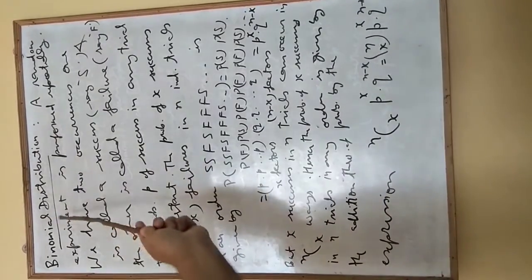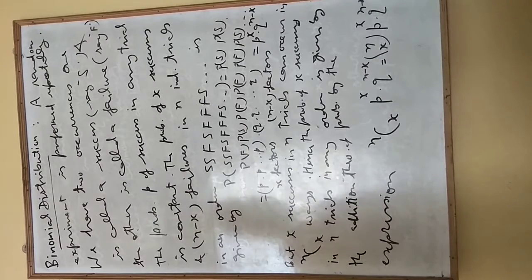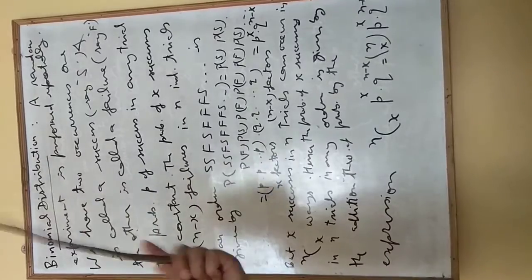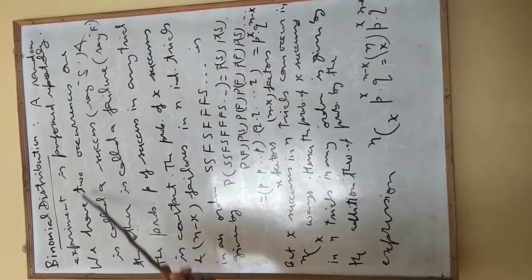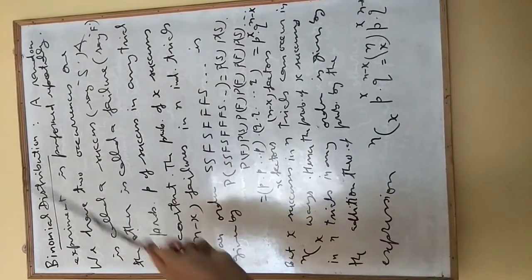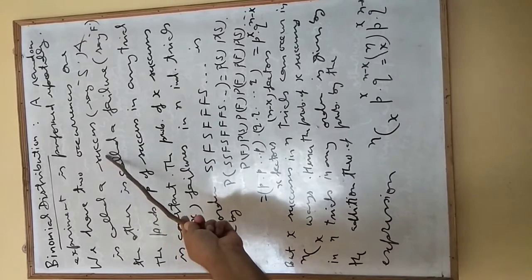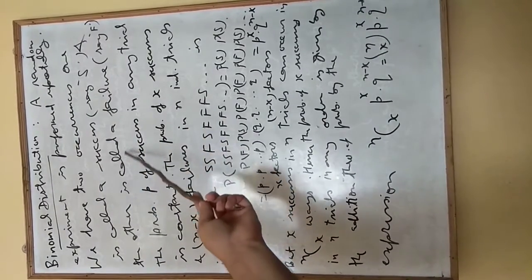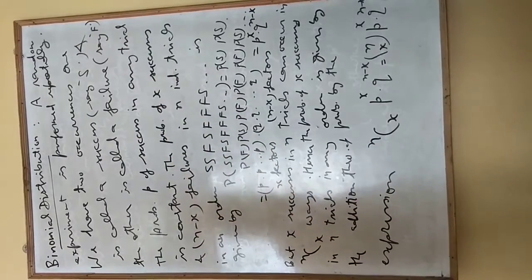Suppose we have a random experiment and we are performing this experiment repeatedly. We have two occurrences: one is called a success, we will denote it by capital S, and the other one is called a failure, we will denote it by F.